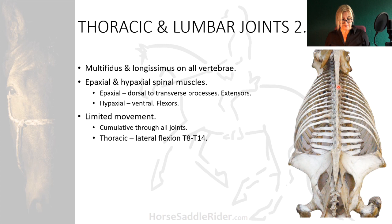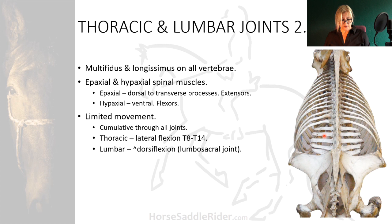In the lumbar region, lateral flexion is blocked by sizeable transverse processes, although dorsiflexion is considerable at the lumbar sacral joint. Much of the spinal rotation is created by the limbs making cyclical ground contact.